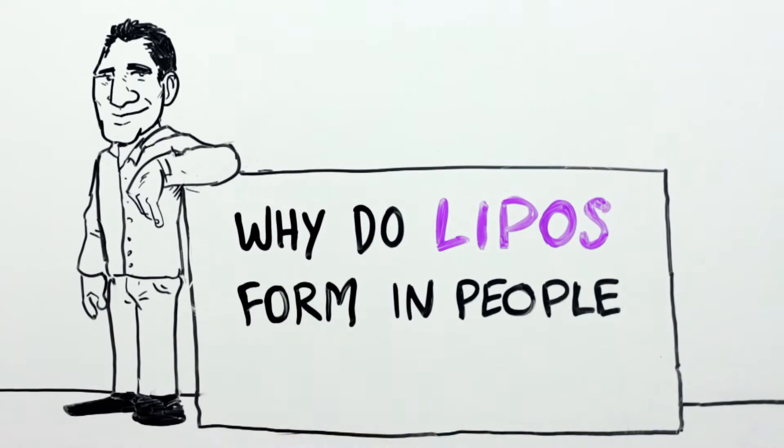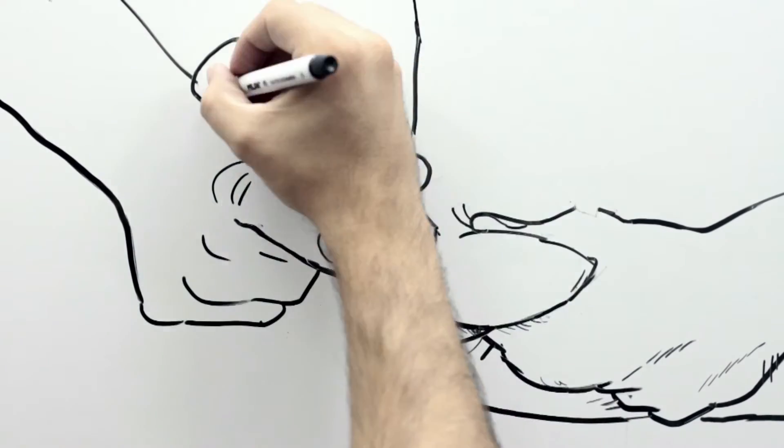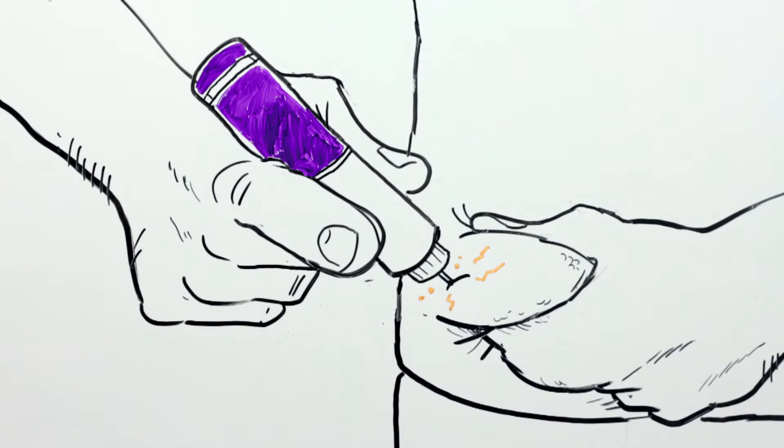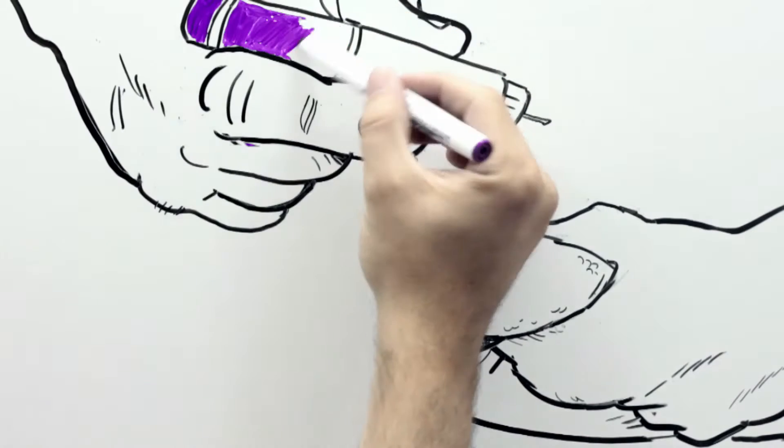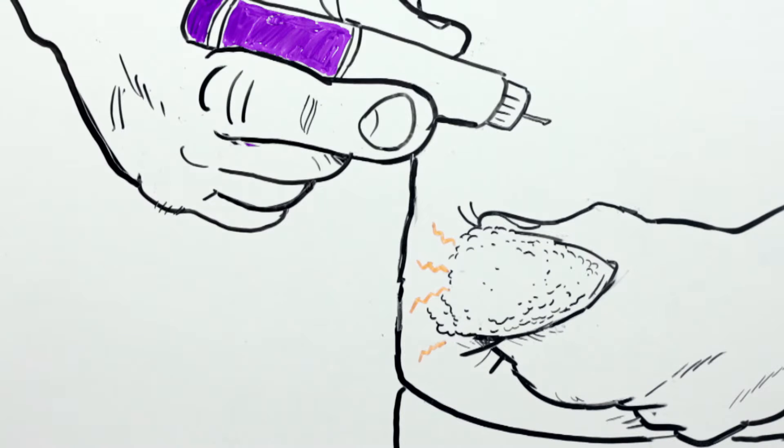Why do lipos form in people with diabetes? According to a recent study conducted in Spain, the main cause is a lack of rotation in insulin injection sites. When you repeatedly inject yourself in the same spot, the probability of a lipo developing is very high.